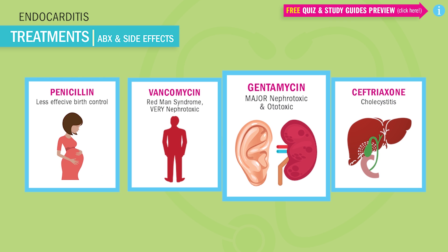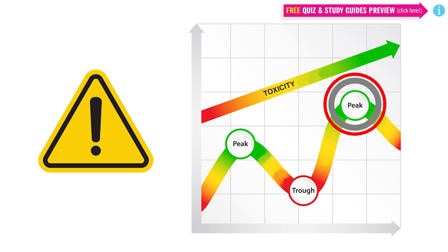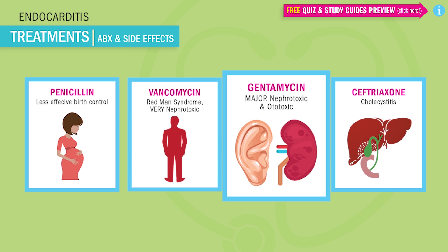Next is gentamicin, which sounds very similar to vancomycin, but it's a totally different antibiotic — a totally different class called an aminoglycoside. Gentamicin has major nephrotoxicity and ototoxicity, meaning it affects both the kidneys and the ears. Patients report ringing of the ears called tinnitus. A funny way to remember: your kidneys are round and shaped kind of like your ears, so ringing of the ears could indicate kidney toxicity. Since both vancomycin and gentamicin cause toxicity, we want to monitor peaks and troughs closely — peaks meaning high, troughs meaning low — to measure the concentration of medication in the body. If it's too high, the kidneys could be at risk.